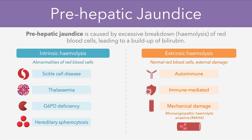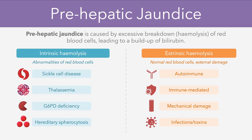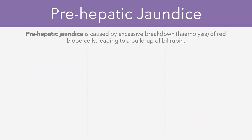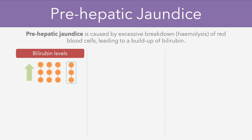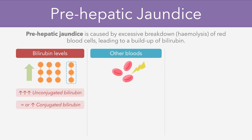Hemolysis could also be caused by specific types of infections or toxins which enter the blood. In terms of the key features of a pre-hepatic jaundice, the bilirubin levels involve a significantly raised unconjugated bilirubin and a mildly raised or normal conjugated bilirubin. There might also be some abnormalities in other blood test results due to the hemolysis effect, for example a decrease in the hemoglobin level as well as an increase in the reticulocyte count. This is often associated with a rise in the lactate dehydrogenase level as well, and basically indicates some form of red blood cell depletion.